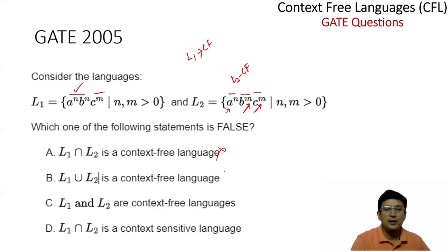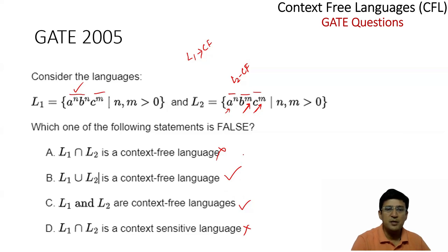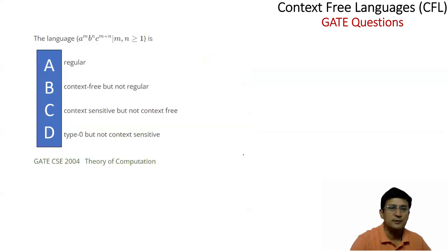Saying that L1 and L2 are both context-free does not mean their intersection is always context-free — this cannot always be said to be true. So options B and C are the correct options.